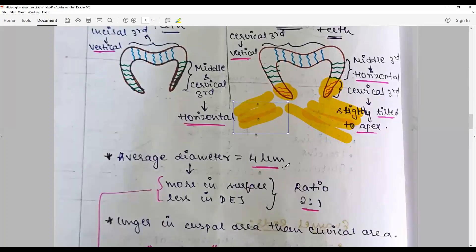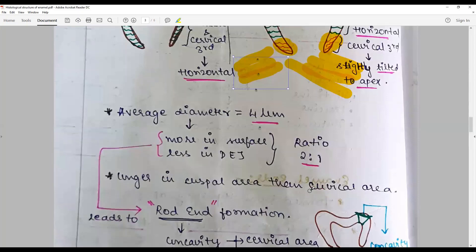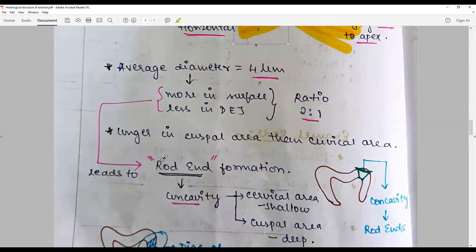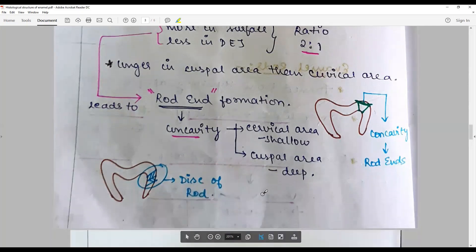The average diameter of enamel rod is about 4 microns, which is more in the surface and less in the DEJ with a ratio of 2:1, and they are longer in the cuspal area than in the cervical area enamel rods. The rod end formation leads with a central concavity. Cervical area is shallow whereas the cuspal area is deep, and this may have its significance in the formation of dental caries.